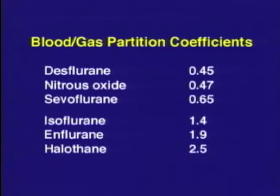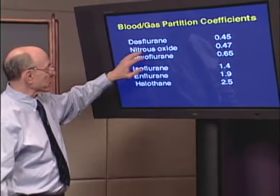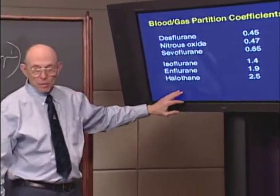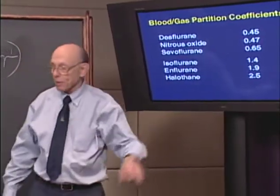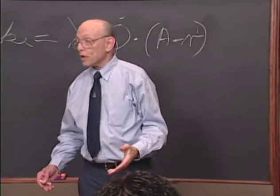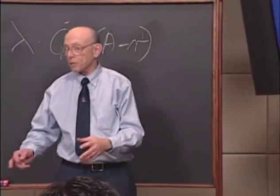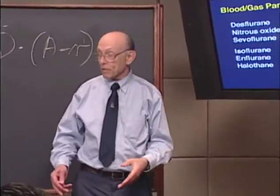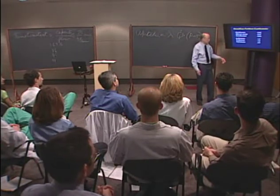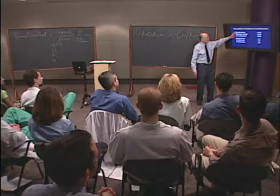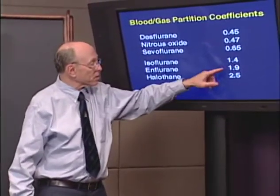Here are blood-gas partition coefficients — numbers you must memorize for board exams. They group into two categories: poorly soluble anesthetics (desflurane, nitrous oxide, sevoflurane) with coefficients around 0.5, and moderately soluble anesthetics (isoflurane, enflurane, halothane) around 2. There were also highly soluble agents no longer used, like diethyl ether (~12) and methoxyflurane (~15).